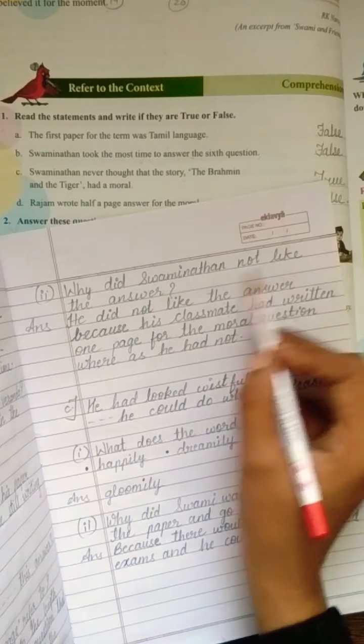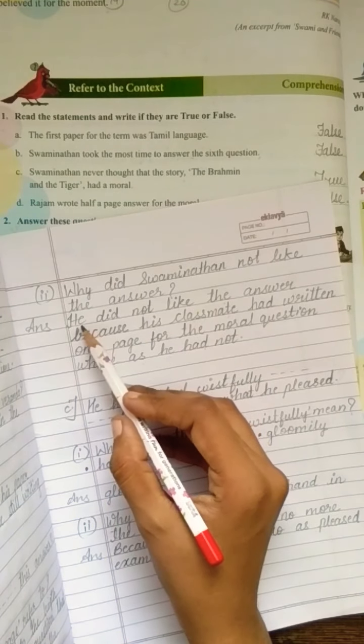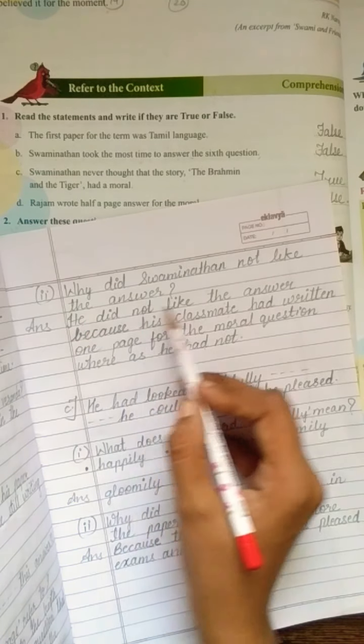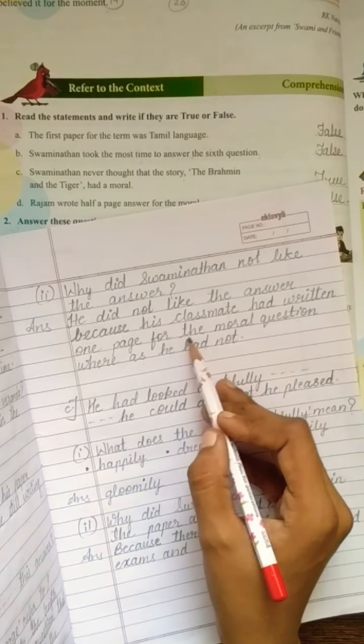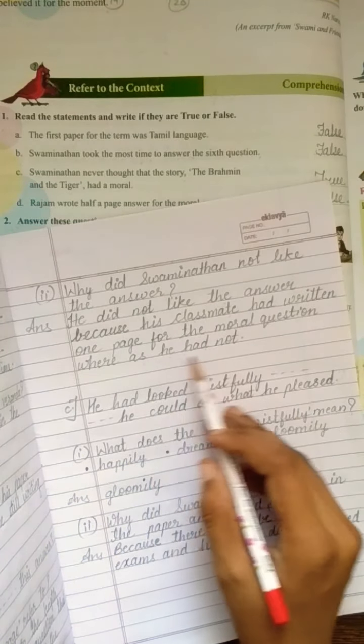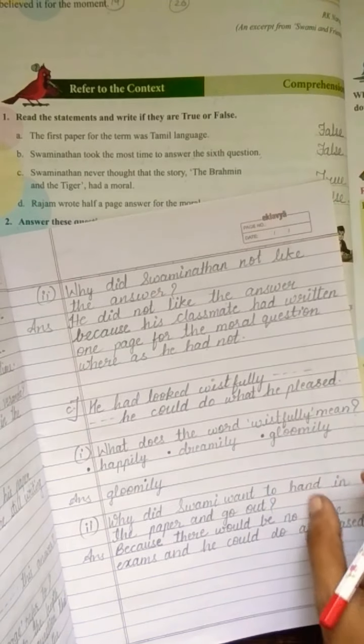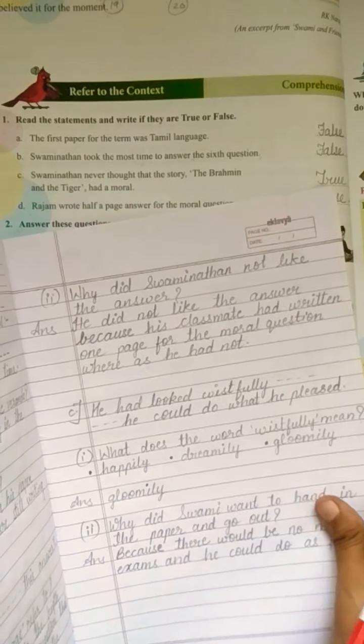Why did Swaminathan not like the answer? He did not like the answer because his classmate had written one page for the moral question whereas he had not. Now, come to extract number C where you have on the next page. So, come to the next side of your book.